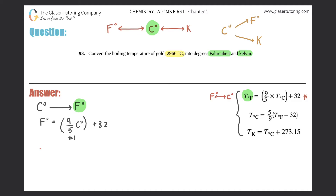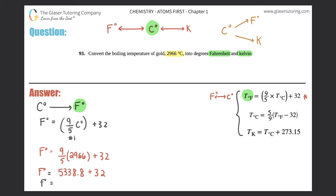Let's plug in: Fahrenheit = (9/5) × 2966°C + 32. I'll do this in two steps. First: 9 ÷ 5 × 2966 = 5338.8. Then Fahrenheit = 5338.8 + 32. Now we just have to apply the correct number of sig figs.